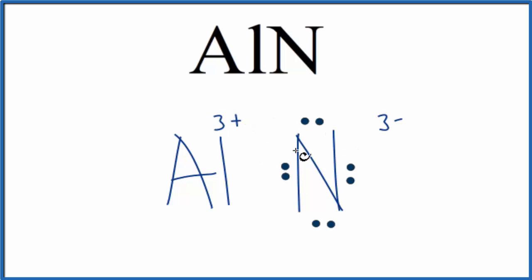We should draw brackets around the nitrogen to show that the electrons were transferred from the aluminum to the nitrogen. You'll often see brackets around the metal as well.